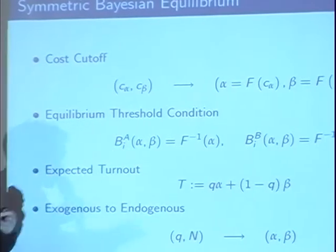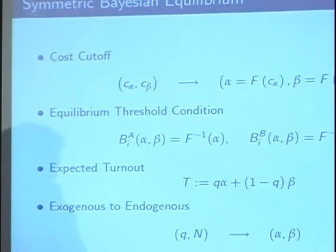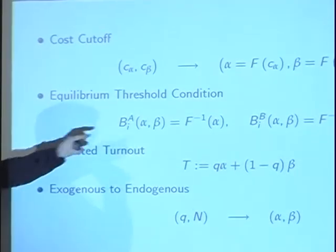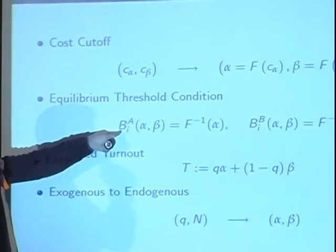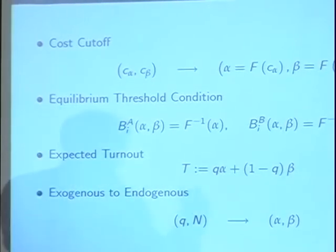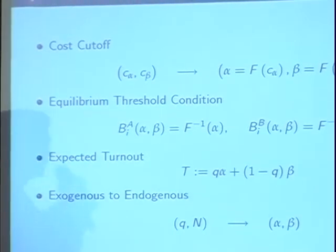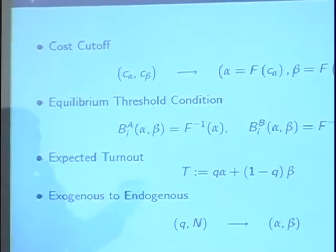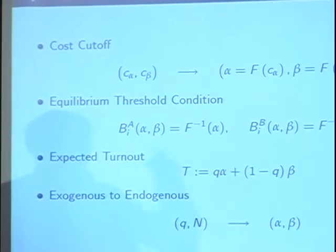In one model, it's the chance that I affect the election and I am pivotal. In the other, it's how much I affect the election every time — knowing that I always affect it, but just a tiny bit above the line.